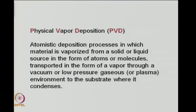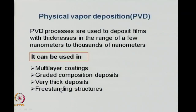In PVD, atoms and molecules are transported through a chamber at low pressure or vacuum, possibly with some gas or plasma, and flow towards the substrate where they condense and form a film. PVD processes are used to deposit films with thicknesses ranging from a few nanometers to thousands of nanometers. It is typically used in multilayer coatings, graded composition deposits, very thick deposits, and also on free-standing structures.